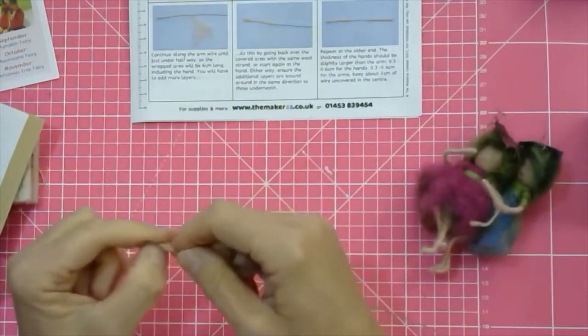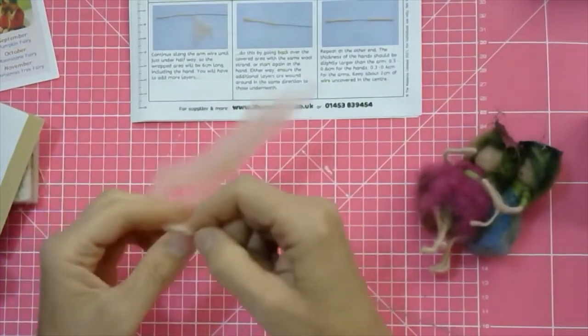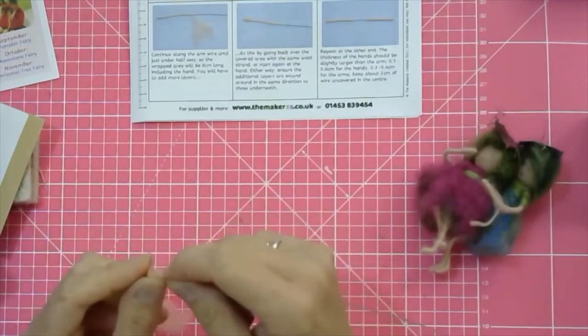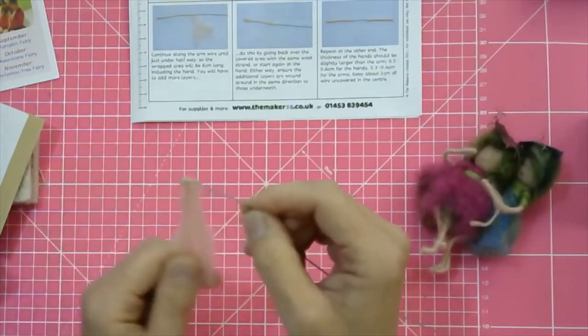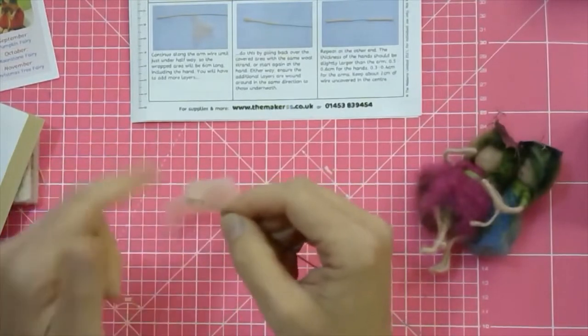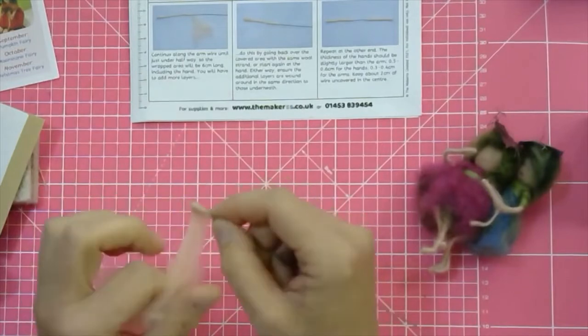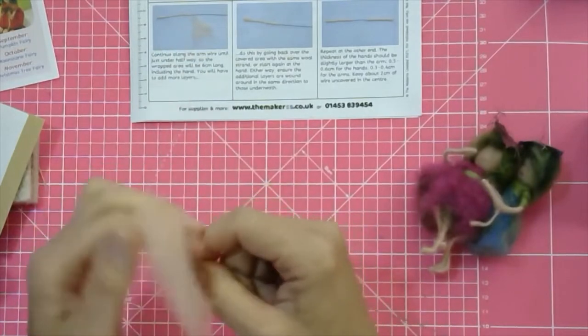One centimeter, and with this one you don't need to be so precise, but you can just bend the end of that wire in now. So you're trapping the wool. Whatever happens, whatever you're building up on there, that ball of wool for the head will not come off.